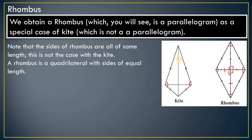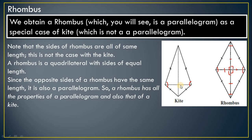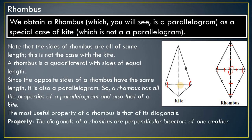A rhombus is a quadrilateral with all sides of equal length. Since opposite sides are equal and opposite angles are equal, it is a parallelogram. It is also a kite because adjacent sides are equal and one pair of opposite angles is the same. So a rhombus is both a kite and a parallelogram — this is a very important point.